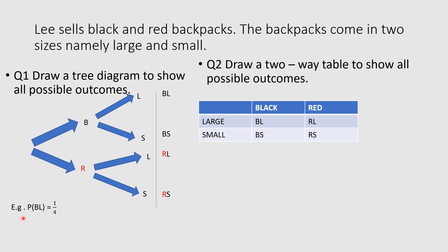So a possible question is: what is the probability of choosing a black backpack that is large? So now I go through all my outcomes. Black large appears once. Number of ways an event can occur - that's one over number of possible outcomes. All together, I have one, two, three, four outcomes. So the probability of choosing a black backpack that is large is one over four.